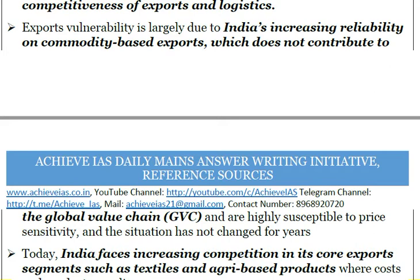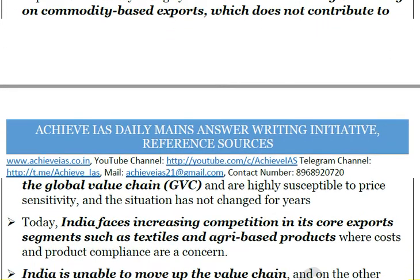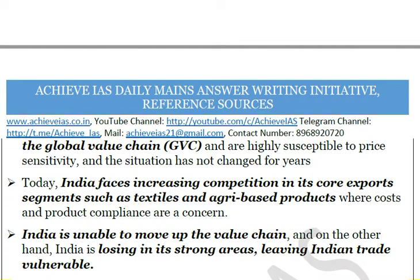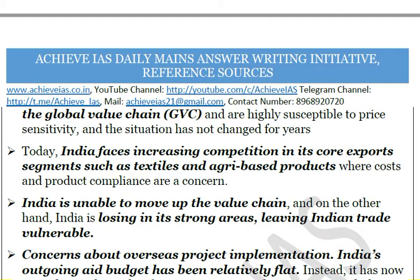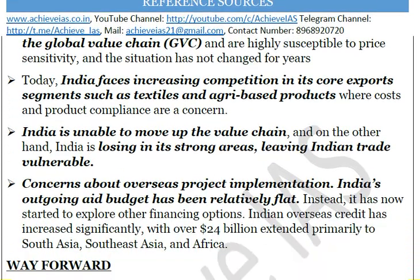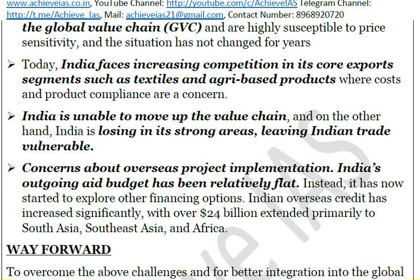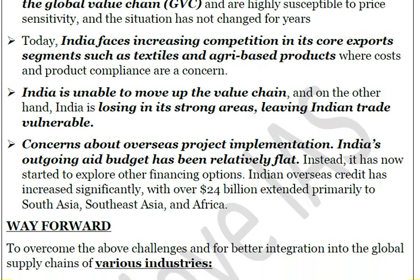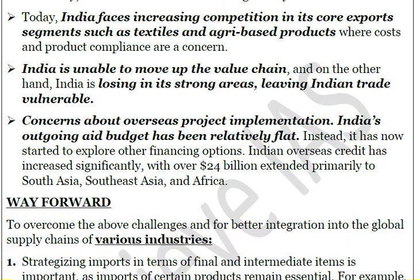India must move up the value chain ladder so that its products are less prone to price sensitivity and India can better reap the benefits of global value chains. There is increasing competition in core export segments such as textiles and agri-based products, along with product compliance issues in these sectors. Unless India moves up the value chain, it will continue to face competition from newly emerging countries, losing its strong areas. There are also concerns over overseas project implementation.